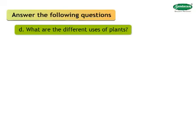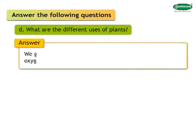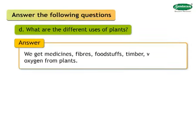D: What are the different uses of plants? Answer: We get medicines, fibers, foodstuff, timber, wood, and oxygen from plants.